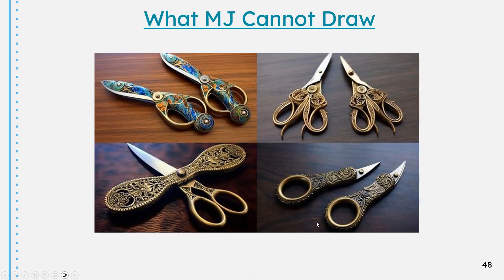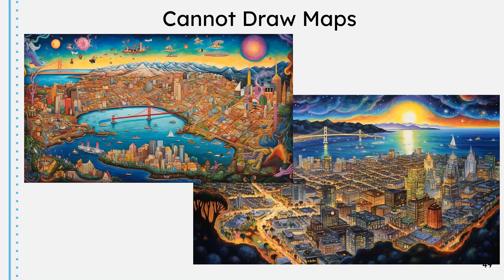What Midjourney cannot draw: this link goes to a post on the official Midjourney group where people shared images it failed to create. Scissors are a big challenge — actually a challenge for any text-to-image generator. Midjourney cannot draw maps — this was my request to draw a map of the San Francisco Bay Area. It does know what the architecture looks like, but does not quite know about seasons. You can create a Golden Gate Bridge in winter and it will put snow on it, though we never have snow here. Even if you ask for Google Maps, it'll draw something fairy-tale-like.